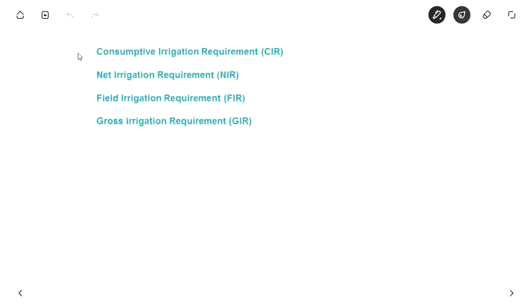Now let us see what are these terms which usually come in problems. Consumptive irrigation requirement (CIR) is nothing but the water which is required to meet the evapotranspiration needs of the crop.